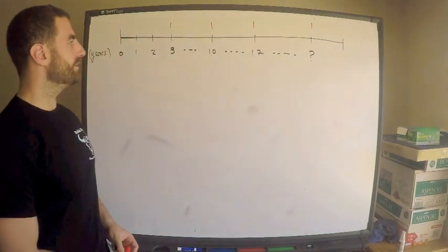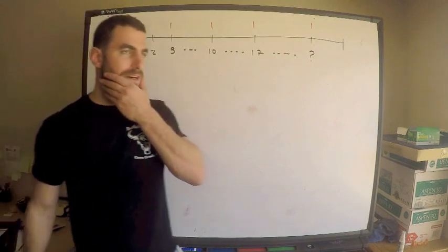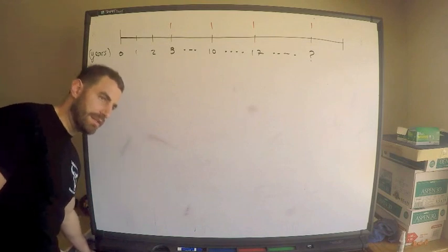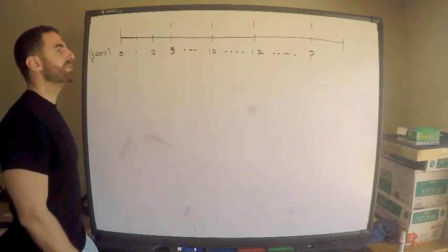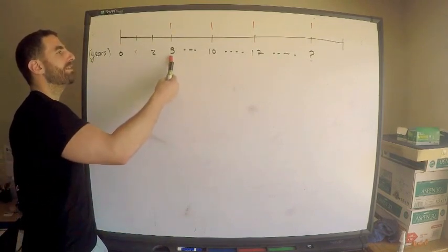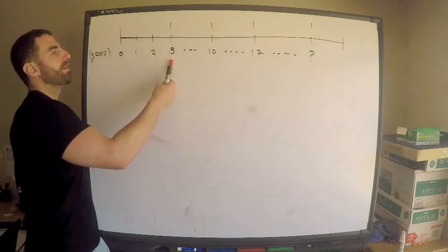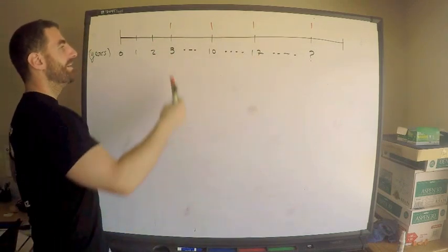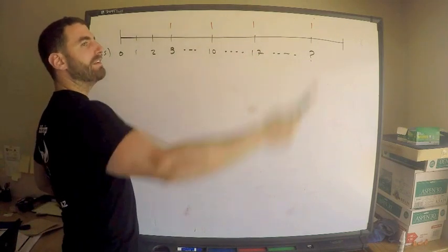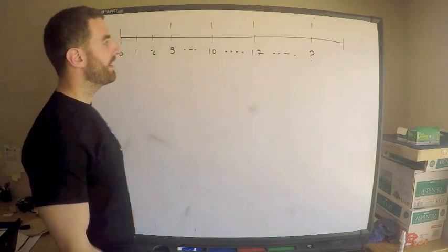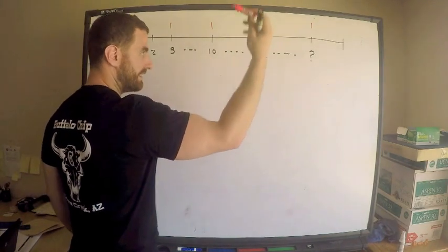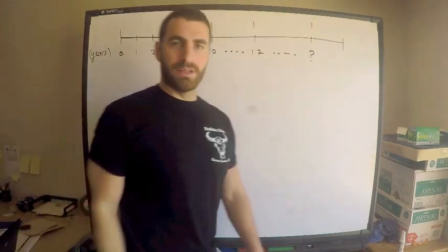Here are the details. I just have my timeline here and we have basically want to find the present value of an annuity where the payments are made in this particular fashion. First one's made at the end of year three, the next payment after that is seven years thereafter, so I have another payment of one at 10, another payment of one at 17.